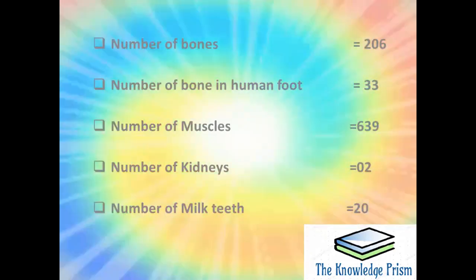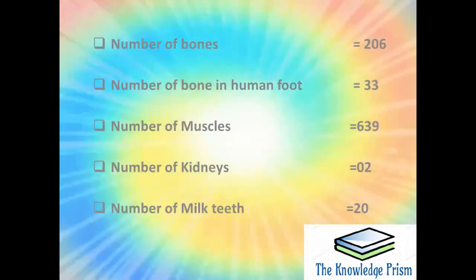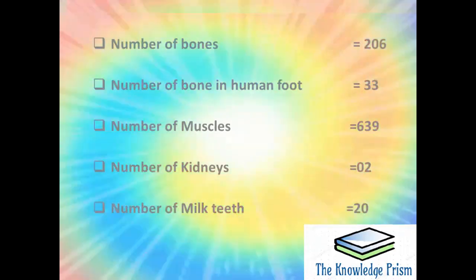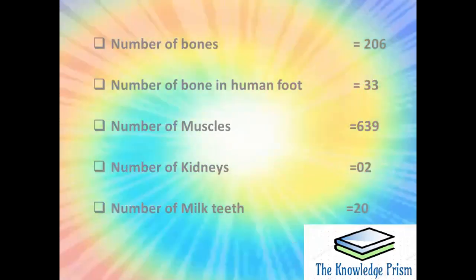Number of bones in human body are 206. Number of bones in human feet are 33. Number of muscles in human body are 639. Number of kidneys in human body are 2. Number of milk teeth are 20.